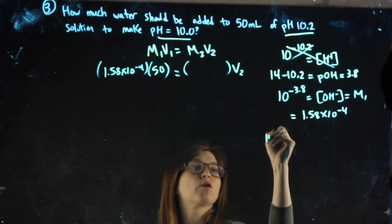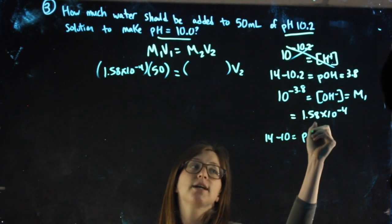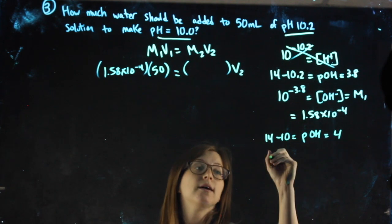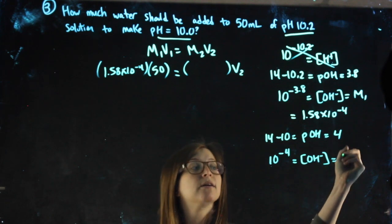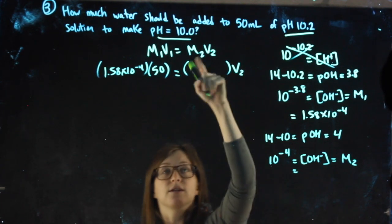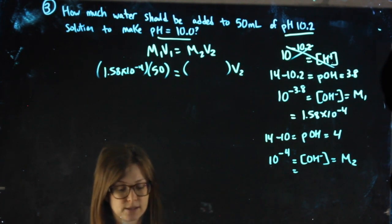I'm going to say 14 minus that pH to get me my pOH. Therefore, when I do 10 to the negative pOH, I have my OH- molarity, which I'm allowed to use in this formula, since we're using a base.